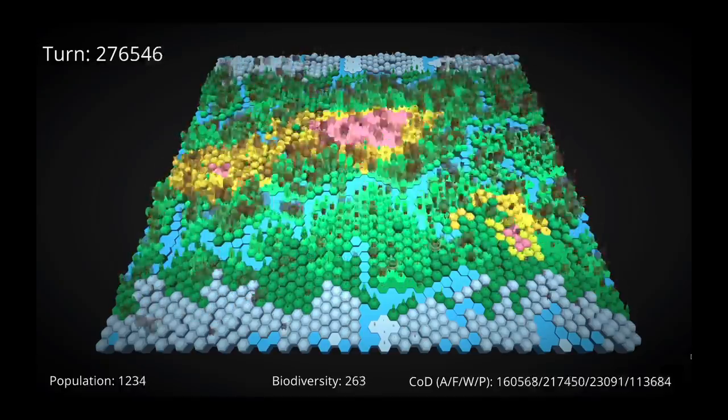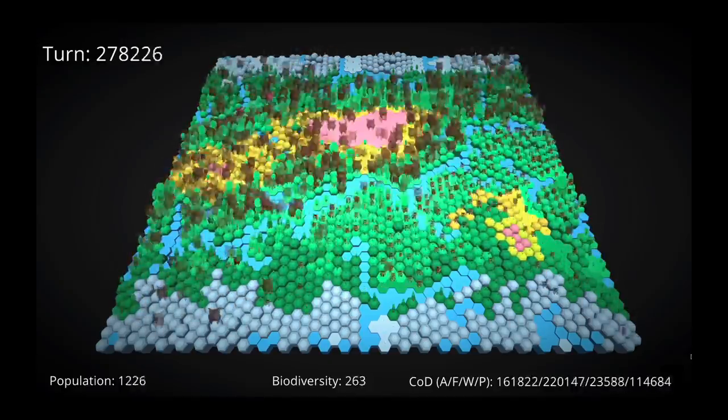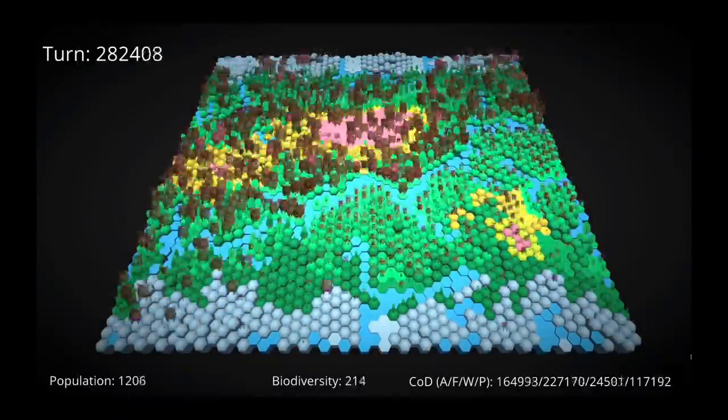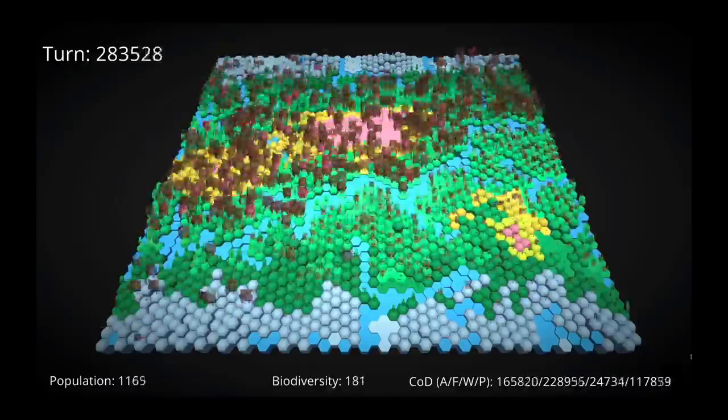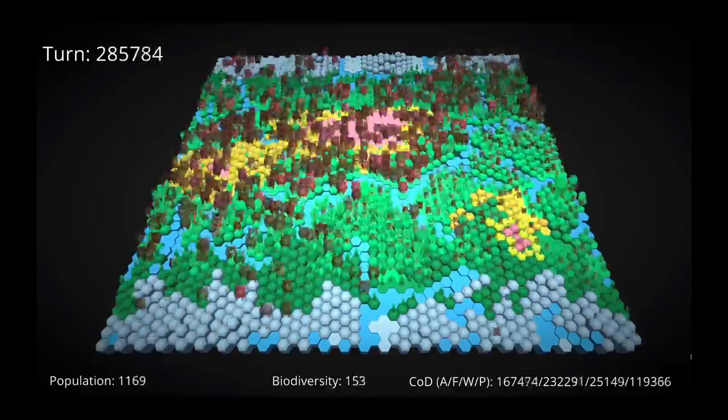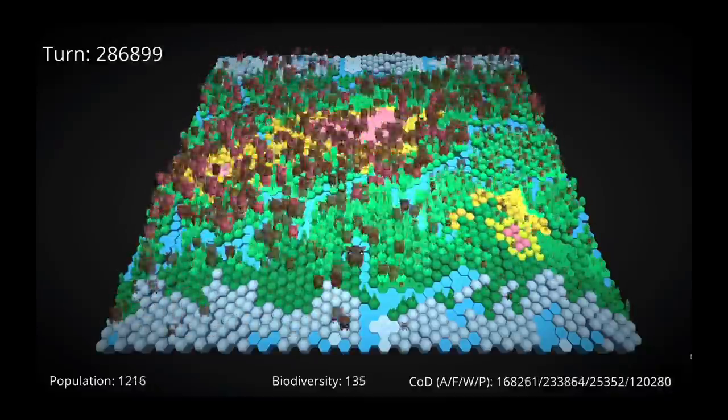Anyway, these mini epochs continue until around turn 280,000 when we enter epoch 5. Epoch 5 brings a return to what seems to be the most stable build for this environment, farm pigs. The simulation terminates itself at 300,000 turns, which is around 9 hours in real time. So there isn't much to this epoch. So let's just think about what happened overall.